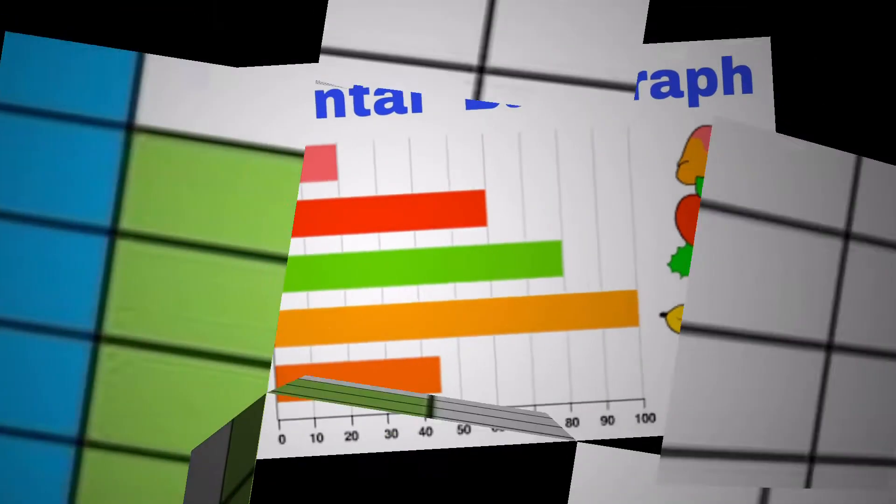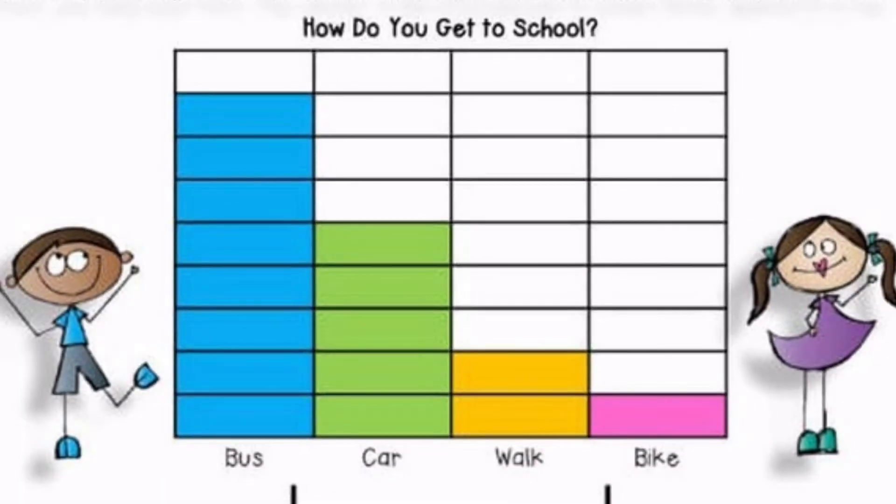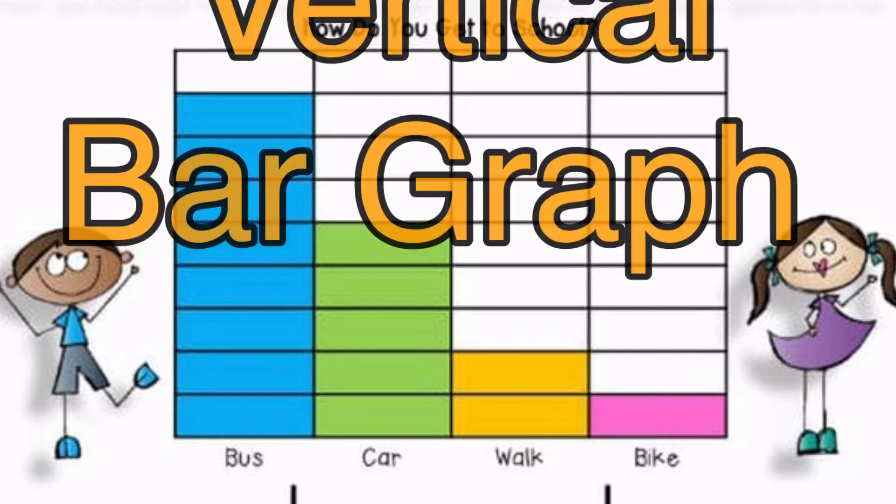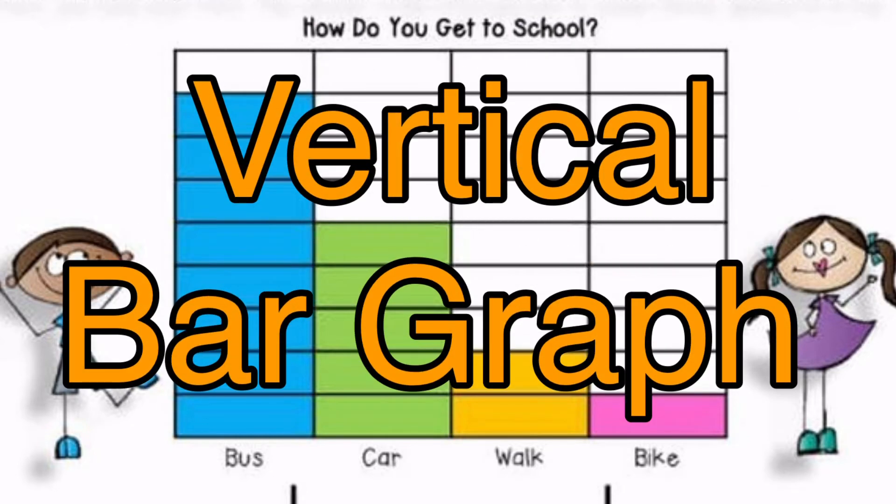Take a look at this one. Can you tell me if this graph is a vertical bar graph or a horizontal bar graph? The correct answer is, yes, it is a vertical bar graph.